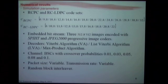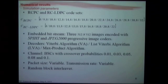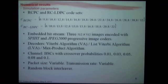You can use any channel code set — the construction is independent of the channel code set. I'll take rate-compatible punctured convolutional codes and rate-compatible LDPC codes. I used three different images using a SPIHT coder and JPEG-2000 — both progressive coders giving embedded bit streams. Channel decoders are the Viterbi algorithm and list Viterbi for the convolutional codes, and the max-product algorithm for the LDPC codes. I tested different crossover probabilities, different packet sizes, different transmission rates, and a random block interleaver.